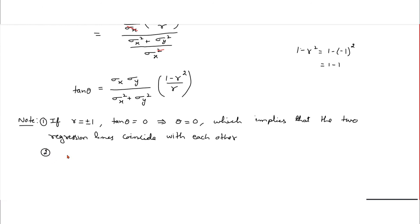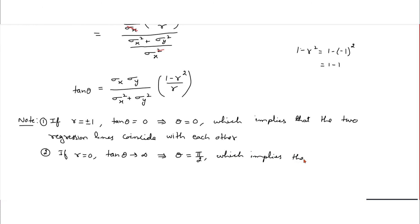Now let us take the second result. Suppose r equals 0. Then 1 divided by r becomes 1 by 0, which is infinity. So tan theta equals infinity, which implies theta equals 90 degrees. This means the two regression lines are perpendicular to each other.